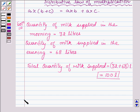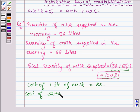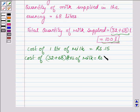Now, the cost of 1 litre of milk is Rs 15 and we are required to find the cost of 100 litres of milk. That is cost of (32+68) litres of milk, which by unitary method is equal to Rs 15×(32+68).